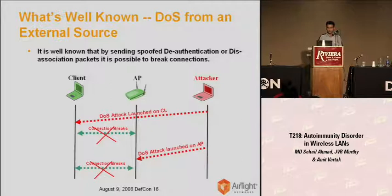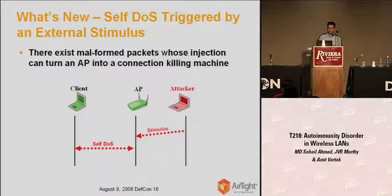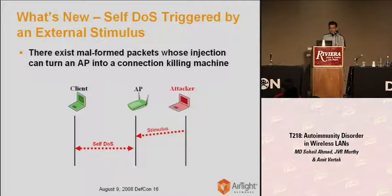What's new here? The new thing we would like to introduce is called self-DOS. In self-DOS, the attacker simply injects one stimulus in the network, and the network launches a DOS attack against its own authorized clients. These stimuli are nothing but a malformed packet which turns the access point into a connection-killing device.